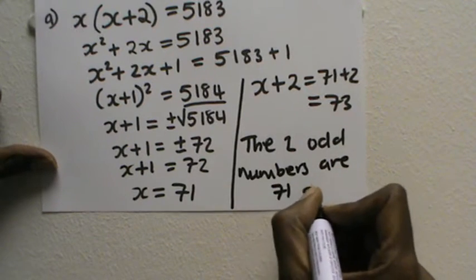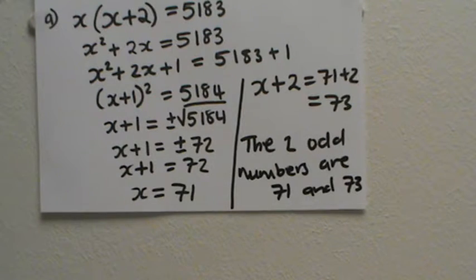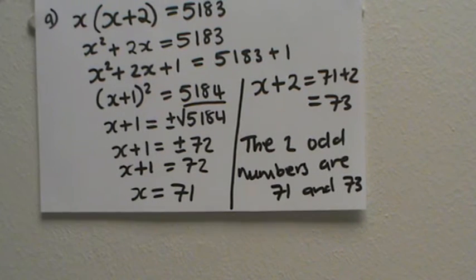71 and 73. Okay, and then you can check this on your calculator. If you multiply 71 and 73, you will see that the product is 5183. Then you're done.